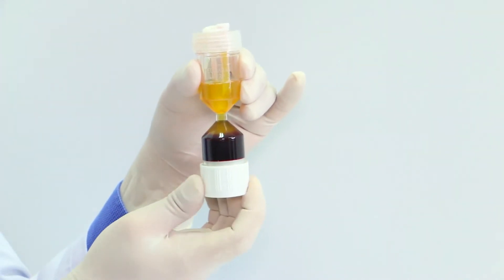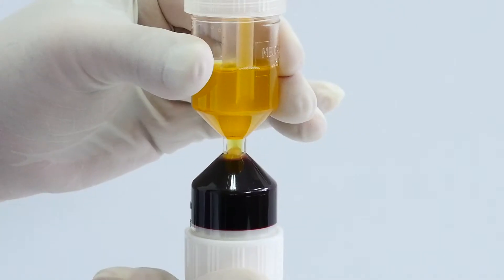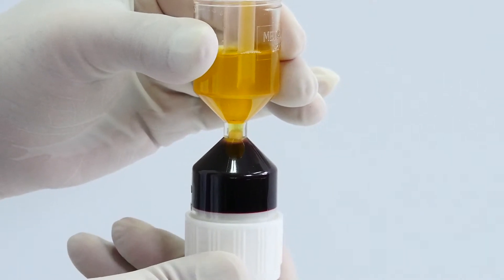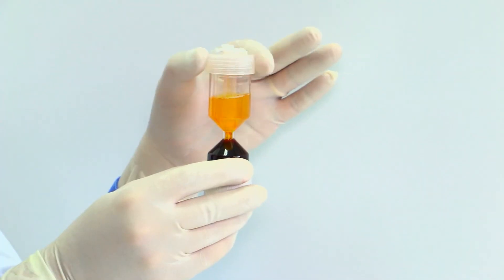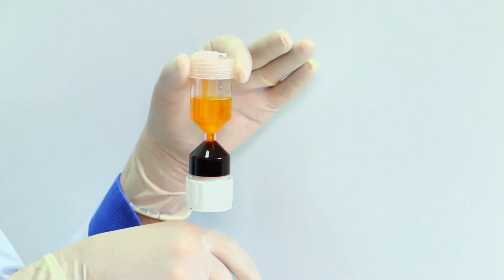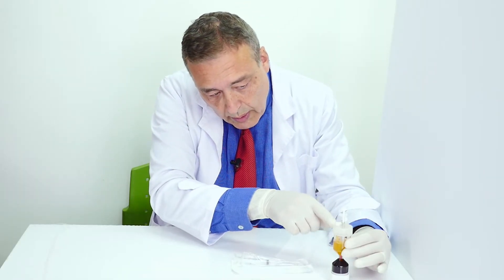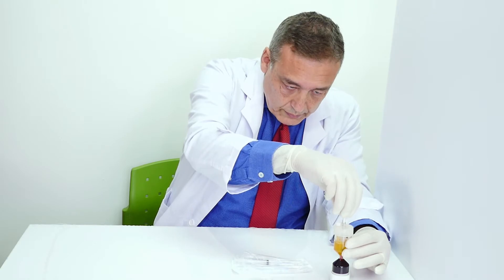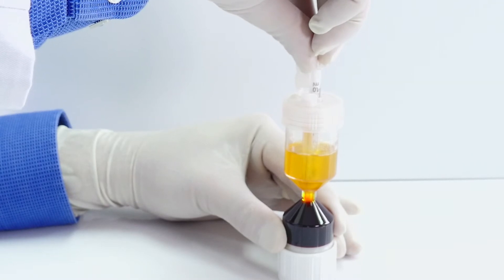You simply twist the bottom and you are going to see the buffy coat coming up very gently. Once the buffy coat raises the upper neck exactly here, you just need to twist the upper chamber. And that way you are going to be ready to aspirate only the buffy coat. So you just insert a 1 ml syringe in the middle shaft and then you will gently aspirate the buffy coat.